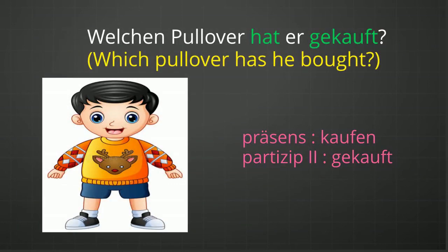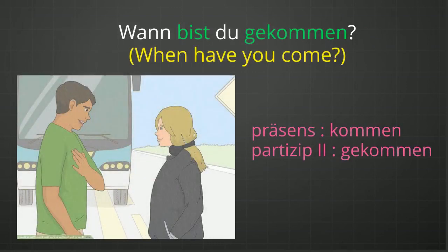"Welchen Pullover hat er gekauft?" Gekauft is the Partizip II form of the verb kaufen, which is a Haben verb. That is why the conjugated form of Haben is there and gekauft is written at the end of the question. "Wann bist du gekommen?" Gekommen is the Partizip II form of the verb kommen. Kommen shows a change of position and that is why it has to be used with the helping verb Sein. The conjugated form of Sein is at second position as we are writing a W-Frage, and gekommen is at the end of the question.